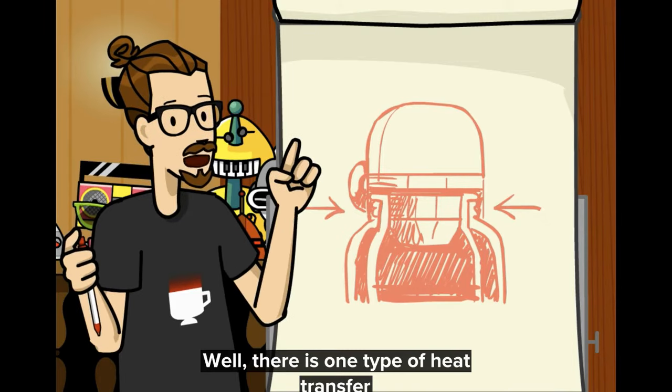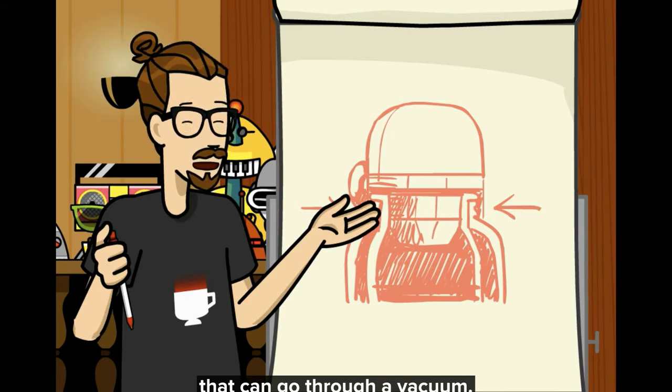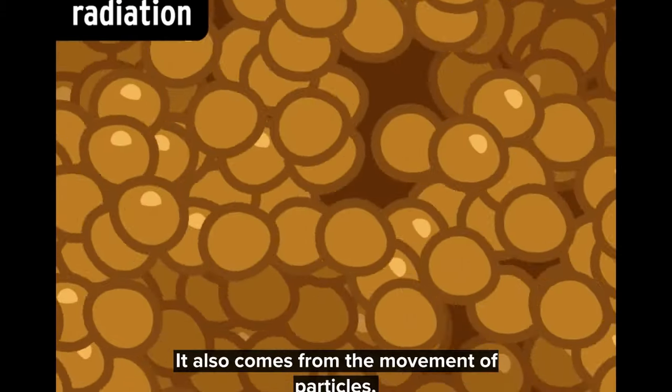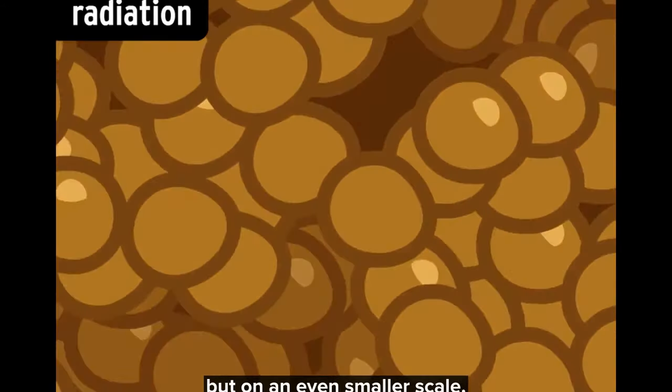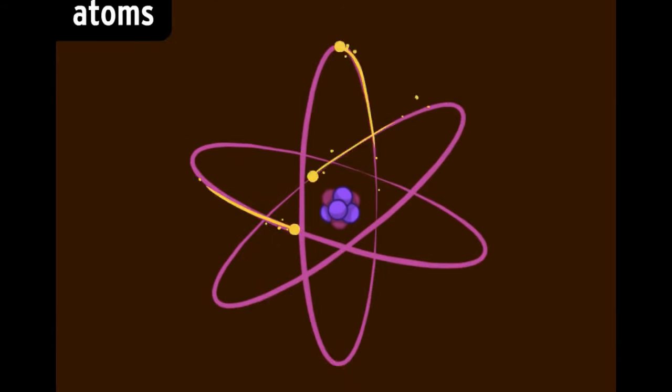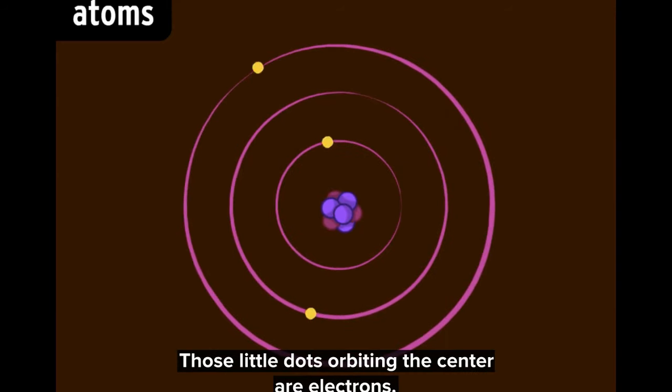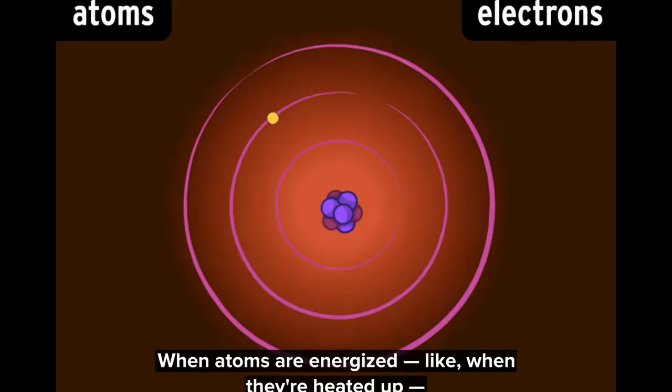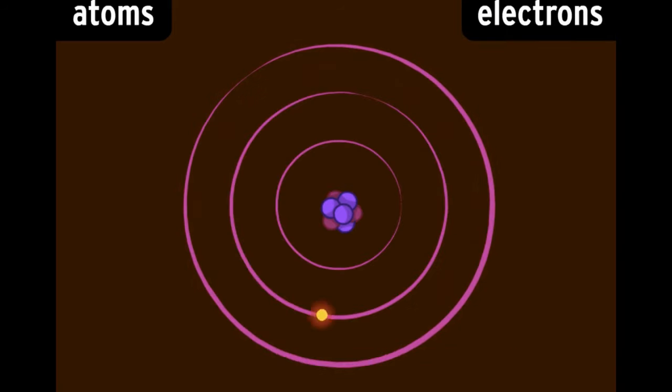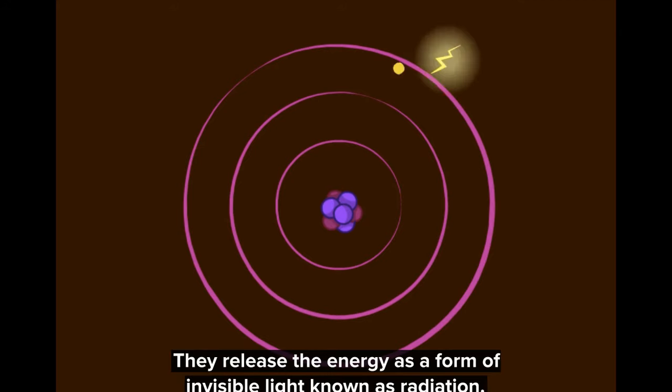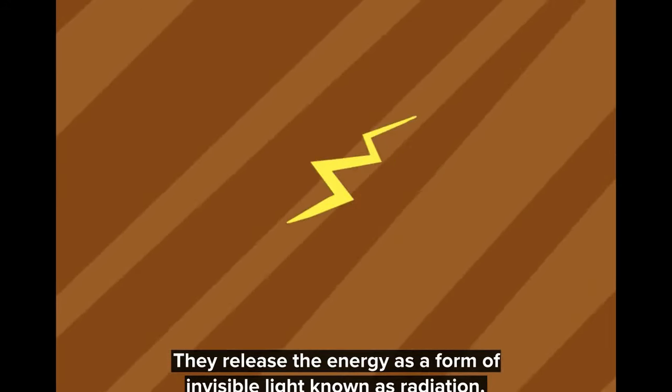Well, there is one type of heat transfer that can go through a vacuum. It's called radiation. It also comes from the movement of particles, but on an even smaller scale. Molecules are made up of atoms, which you've probably seen drawn like this. Those little dots orbiting the center are electrons. When atoms are energized, like when they're heated up, electrons absorb some of that energy, but they don't hang on to it for long. They release the energy as a form of invisible light known as radiation.